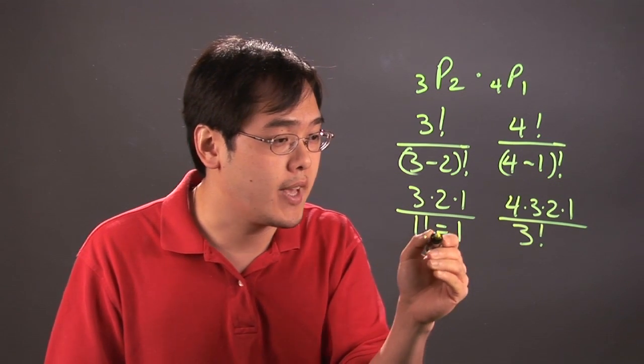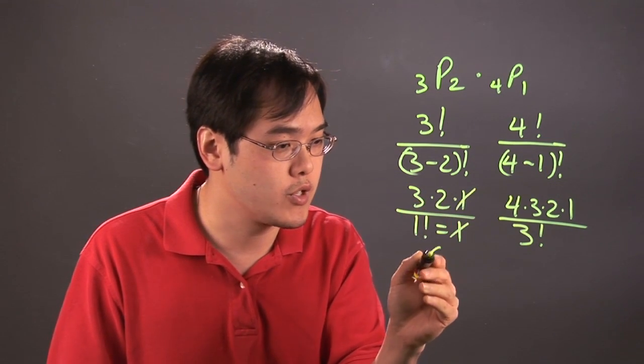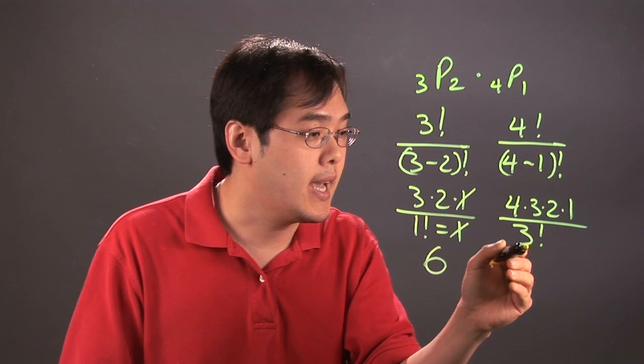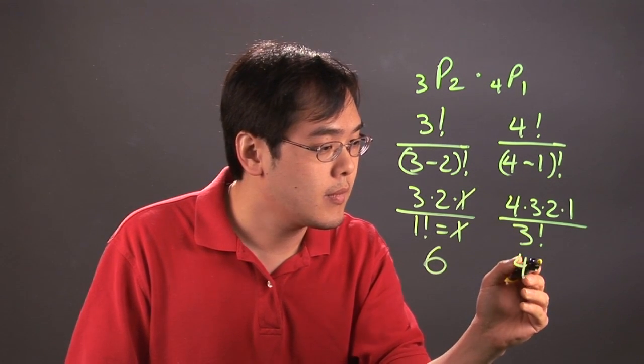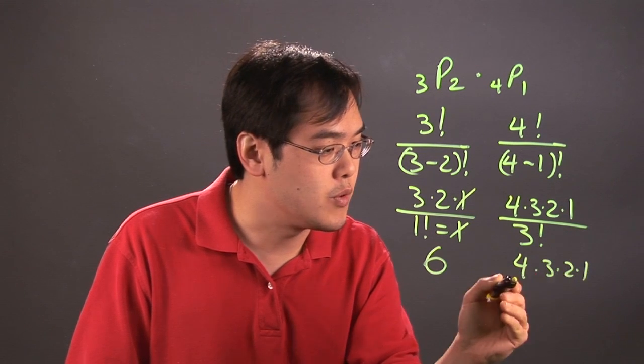Now in this particular case the 1s cancel, so you're left with 3 times 2, which is going to give you 6. And with 3 factorial, that's going to be 3·2·1, so it's going to be 3·2·1 with the numbers multiplied together.